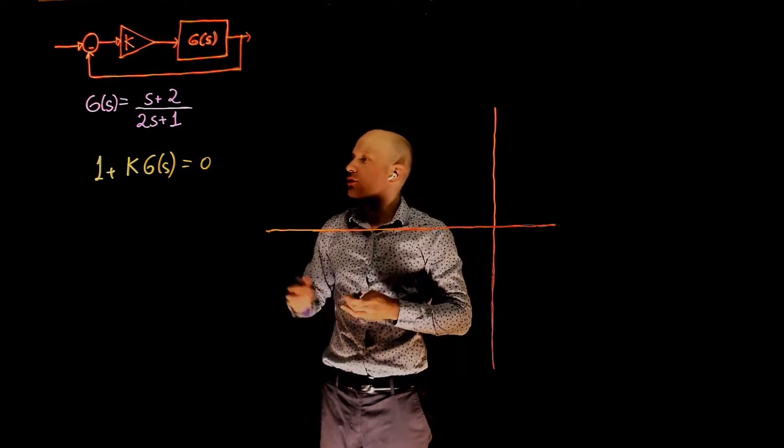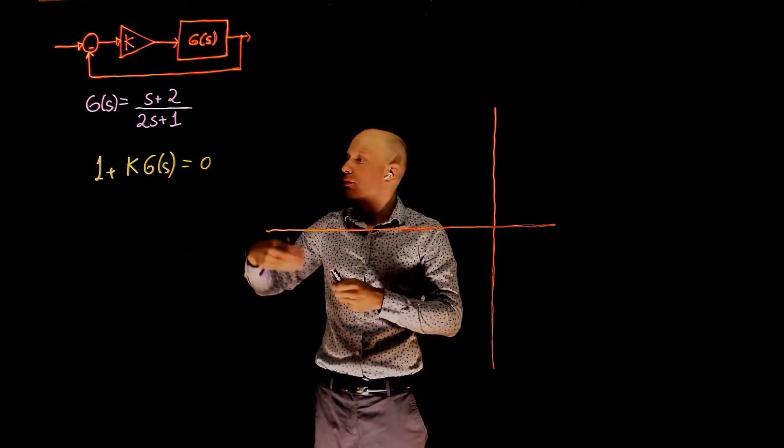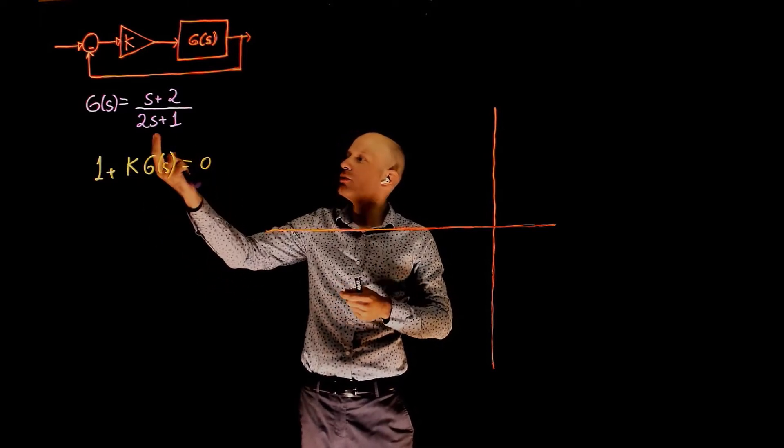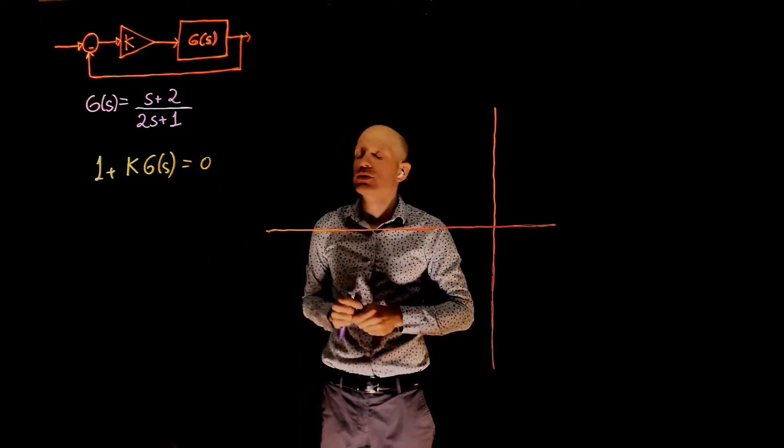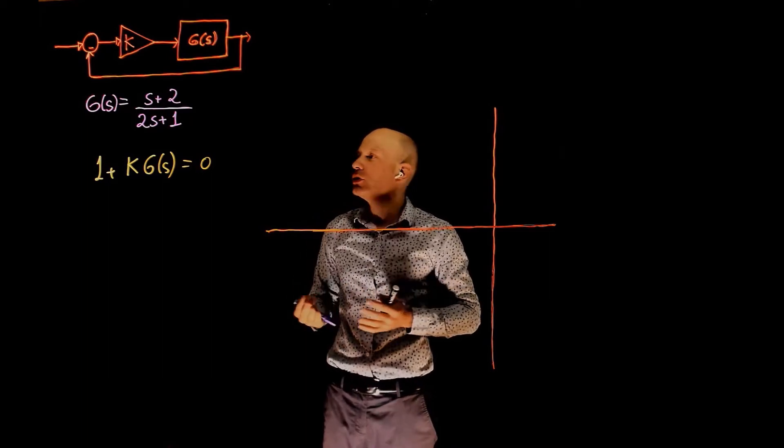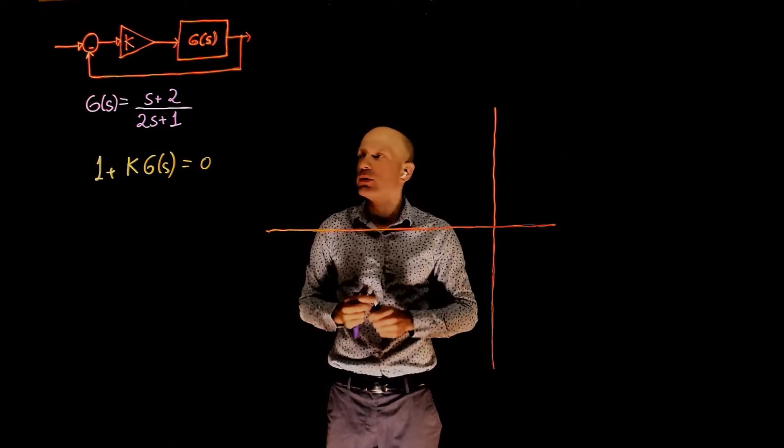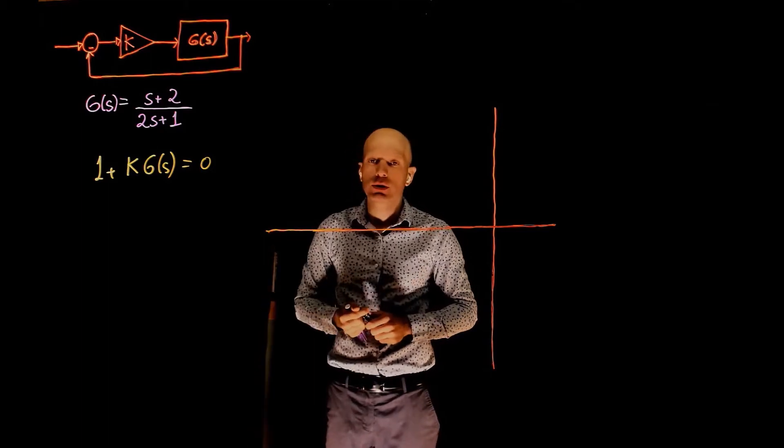When k goes from zero to infinity, the poles or the roots of this equation will go from the location of the poles of g to the location of zeros of g of s. We now need to determine the poles and zeros, and then use the rules that we learned in the lecture to determine the root locus.